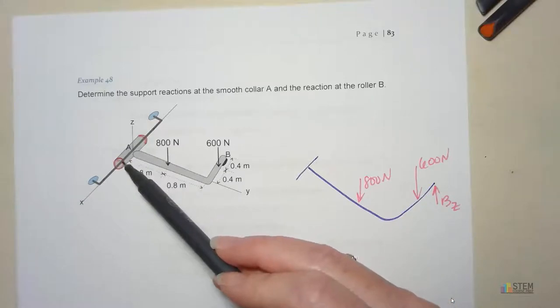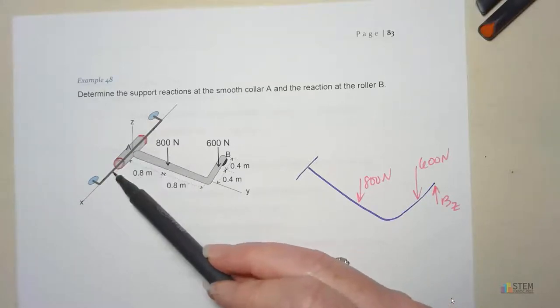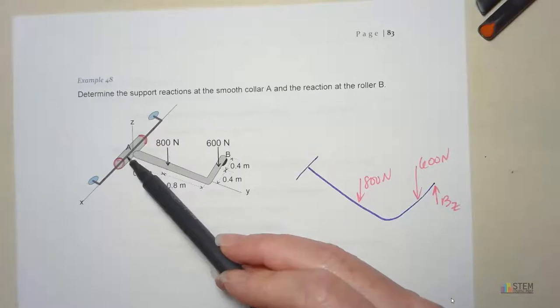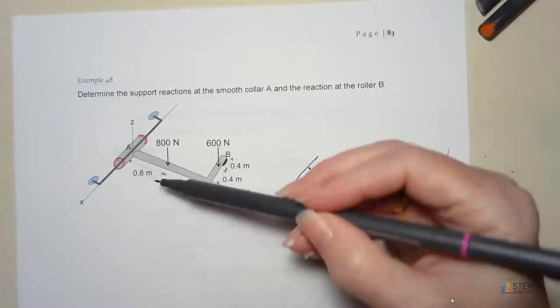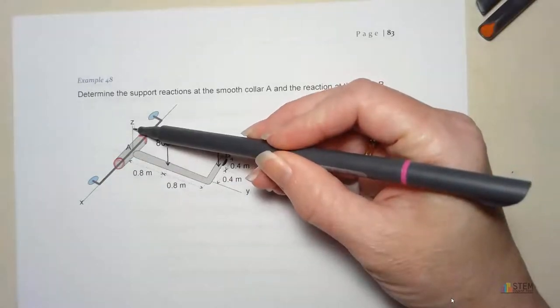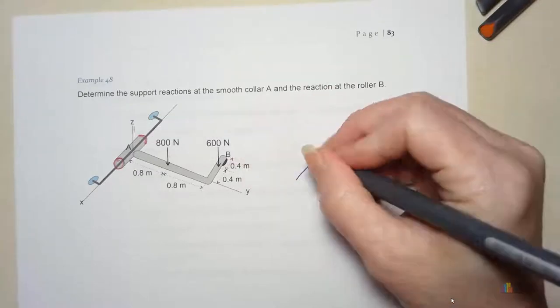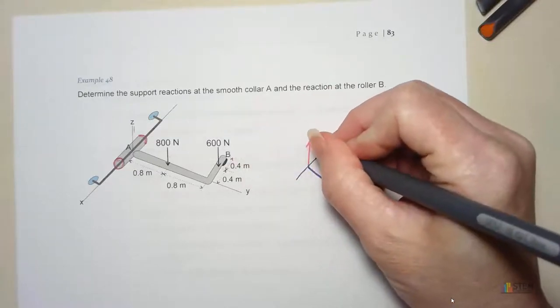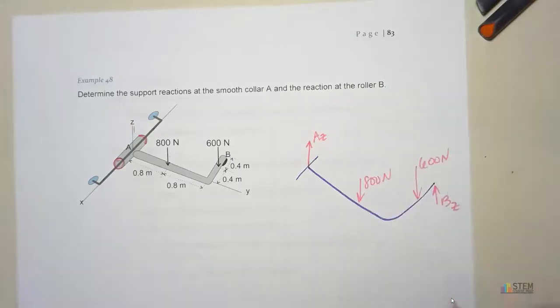If you look at this, remember, think of this as a cylinder and there's this bar going through it. Are we going to be able to have translation in the Z direction? No. So there's a force to prevent that translation. Let's call that AZ.